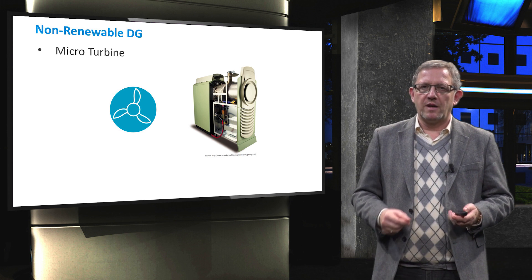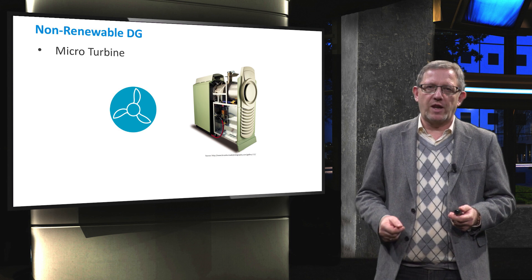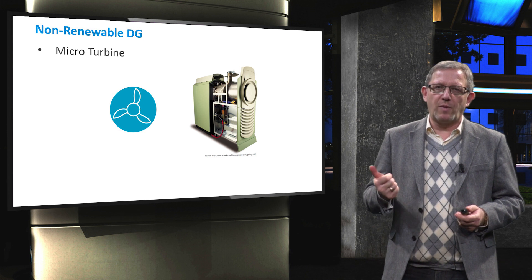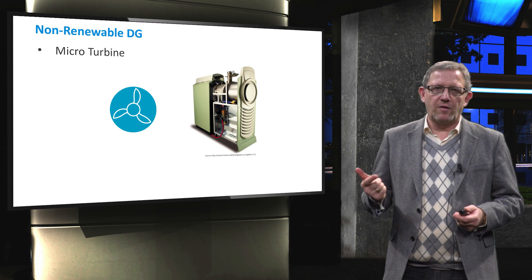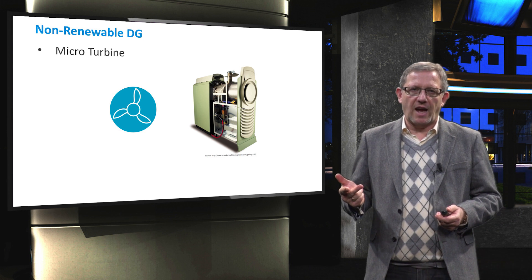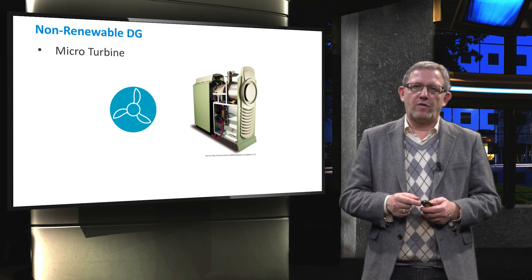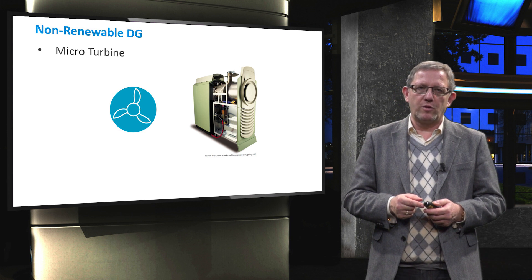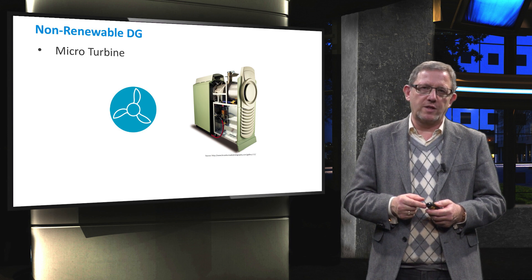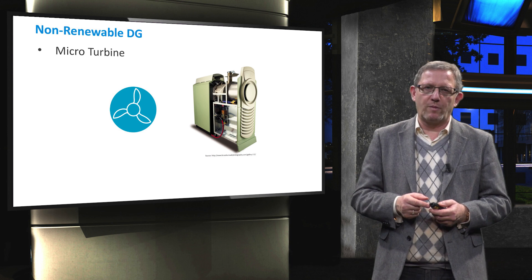Typically, the microturbine consists of three parts: the turbine, radial flow compressor, and combustor. The size of a microturbine could vary from low to high values, for instance from 30 kilowatt to 1 megawatt.